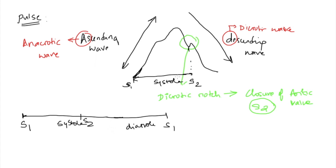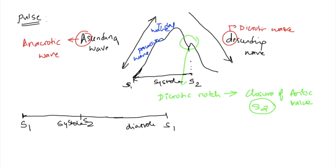Now, the ascending wave is further divided into two parts. The first part is called the percussion wave, and the second part is called the tidal wave. So the ascending wave has two components: the percussion wave followed by the tidal wave. Let's now understand why we get each of these curves — why the pulse waveform looks the way it does.